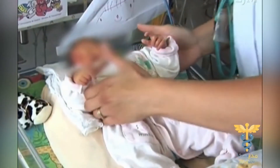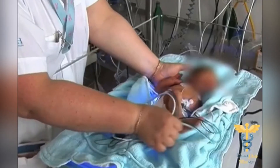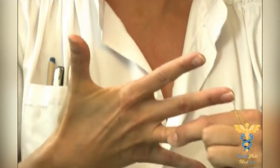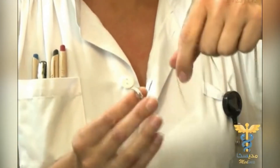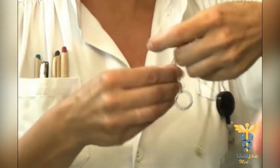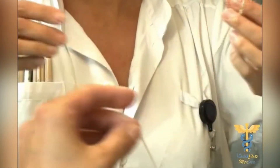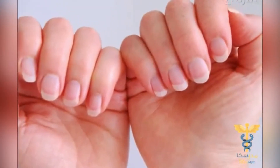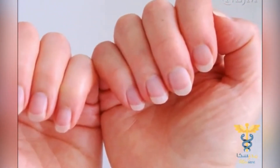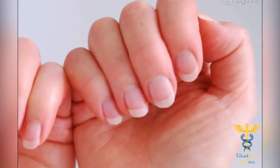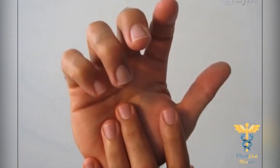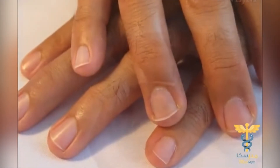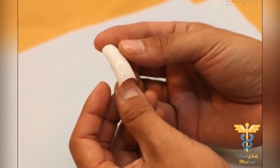Wearing jewelry such as rings increases the bacterial load of the skin. Do not wear rings and bracelets during patient care. If you have a wedding ring, a simple alternative is to wear it on a chain around your neck. In some settings, wedding rings may be tolerated — review and comply with the policy at your healthcare facility. Long fingernails have been associated with infection outbreaks of resistant pathogens in healthcare settings; therefore, keep your fingernails short — less than 0.2 inches or half a centimeter in length — and refrain from wearing artificial nails.